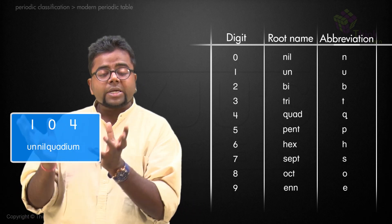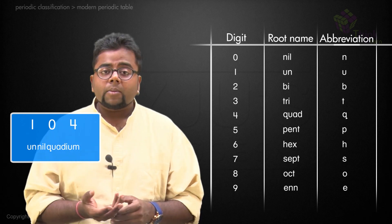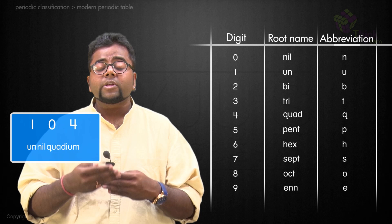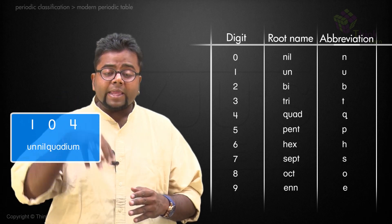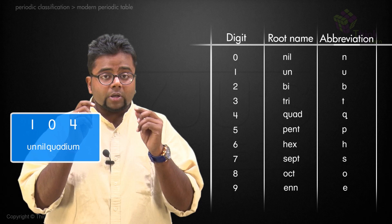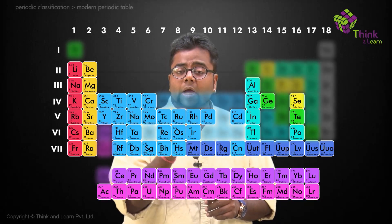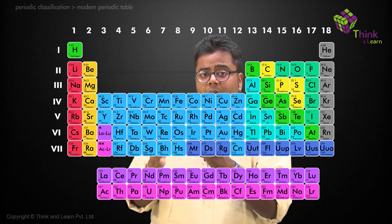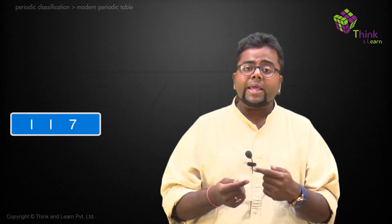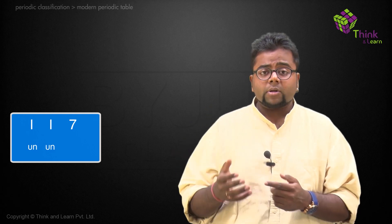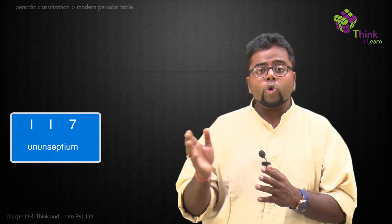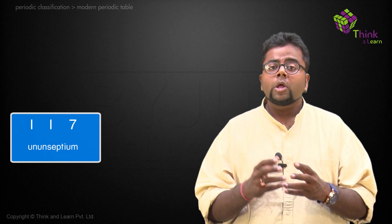In the initial phases, we consider the element we are going to discover as a metal. But when we start observing different physical and chemical properties, that is the time we start saying it might be a non-metal or a metalloid. Not only for atomic numbers above 100, any element in the periodic table which ends with 'ium' would always be a metal. Similarly, if I have another atomic number — say 117 — for one it would be 'un', for another one it would be 'un' again, and for seven it would be 'sept' and 'ium'. So it would become 'un-un-septium'. This is how you can do the nomenclature.